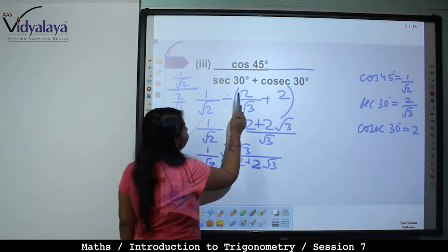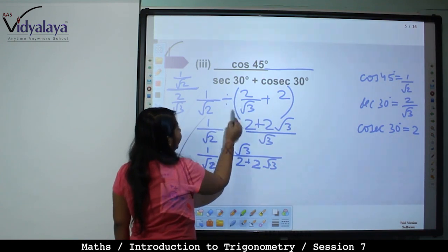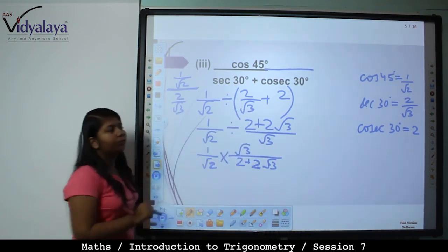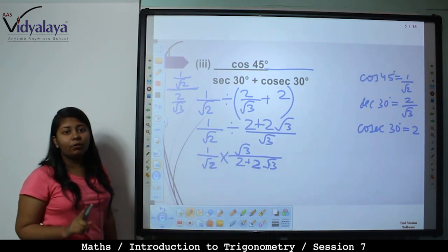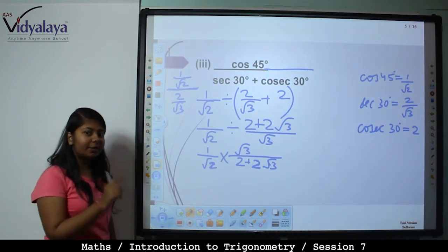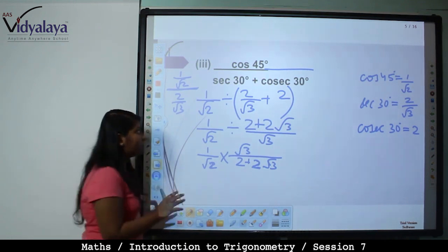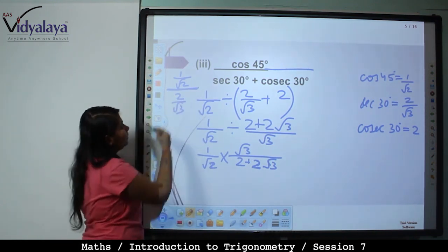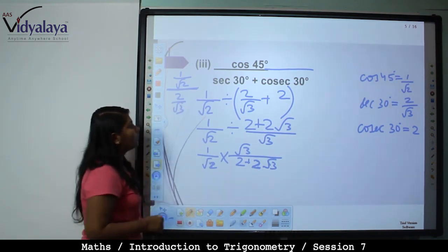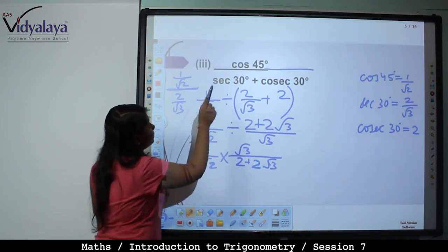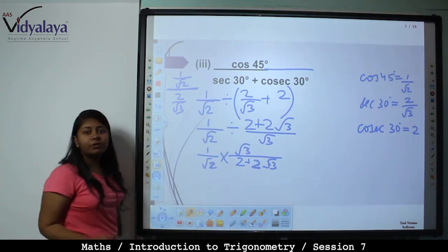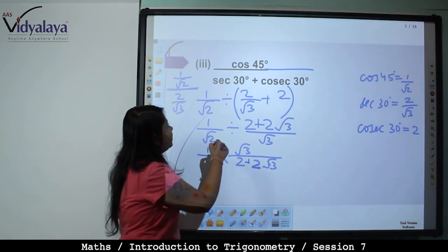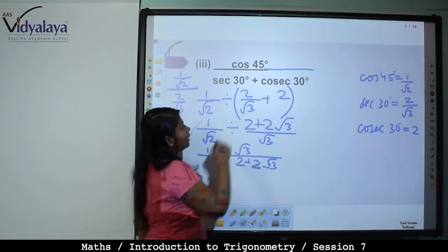We write cos 45 using the division sign divided by 2 by root 3 plus 2. Substitute values: 1 by root 2 divided by (sec 30 is 2 by root 3 plus 2). Brackets are very important — without them you may get a wrong answer.